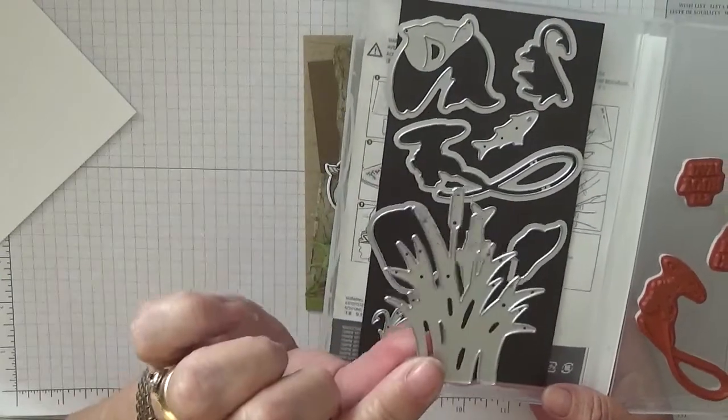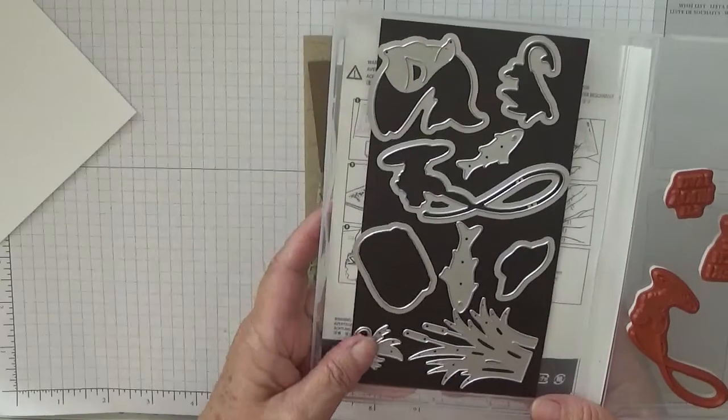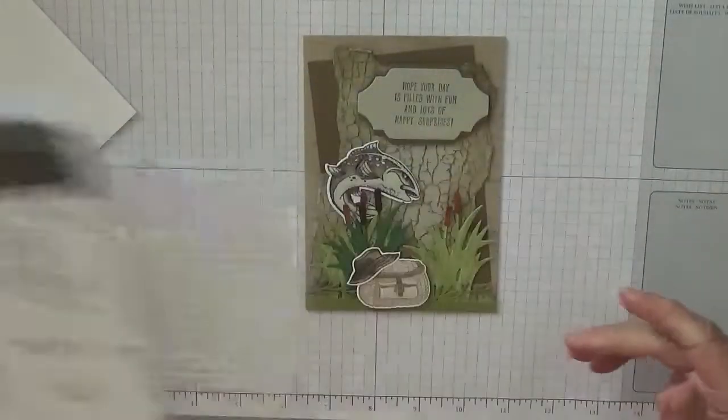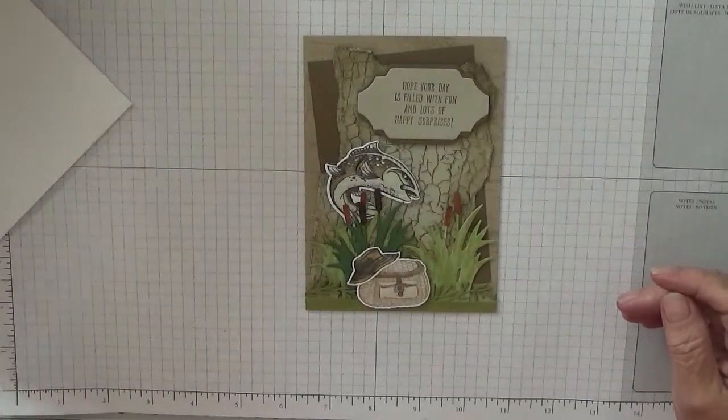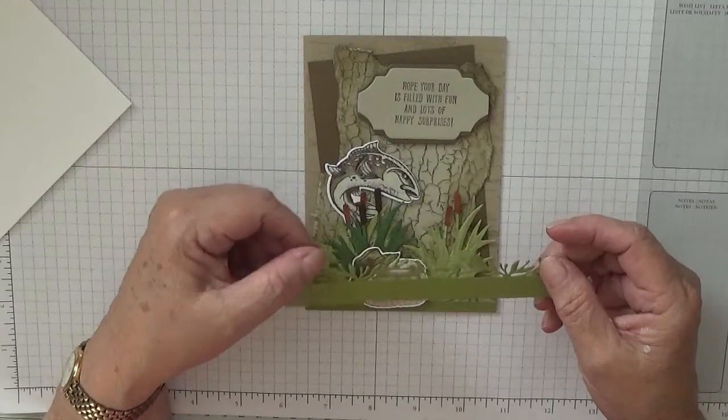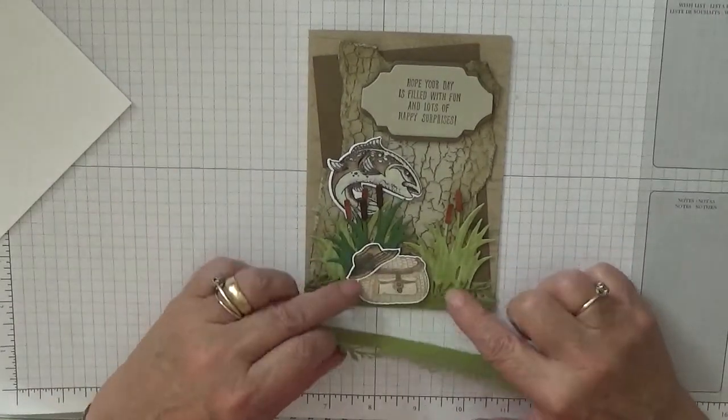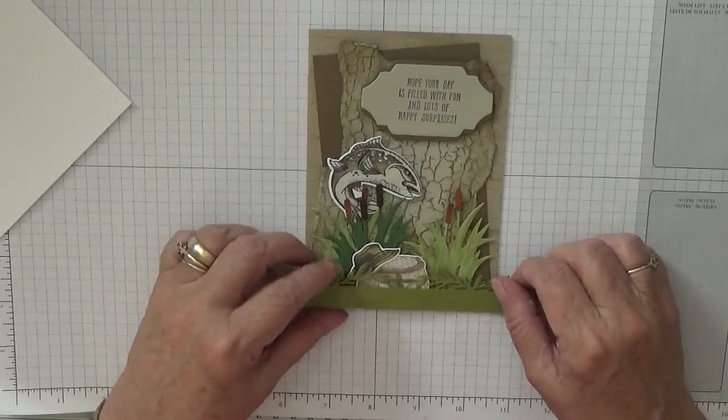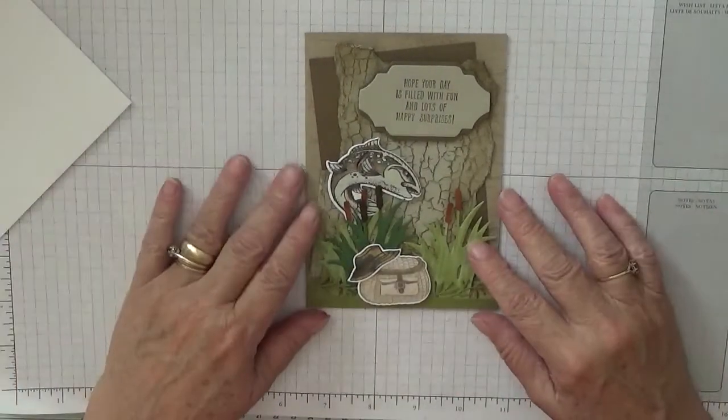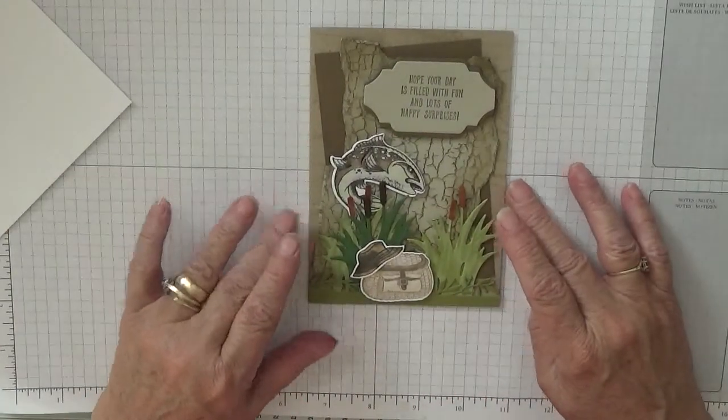I've already cut out the dies. I've also cut out the die from Everything Is Rosy just to give us a bit of greenery, so it looks like we're on the bank here, you know, a bit of greenery across the bottom.